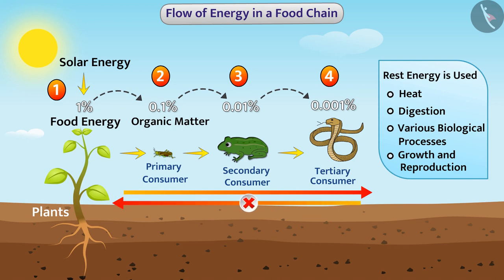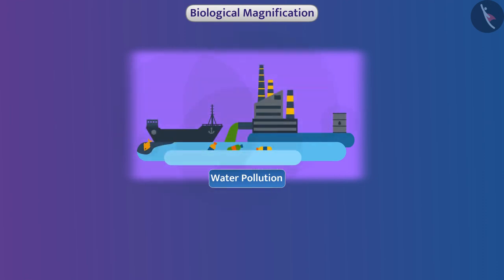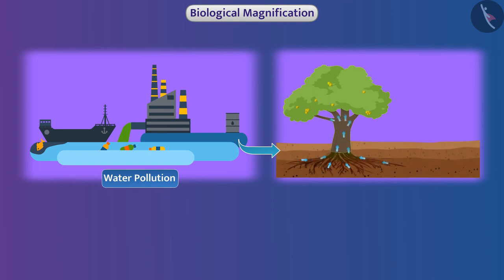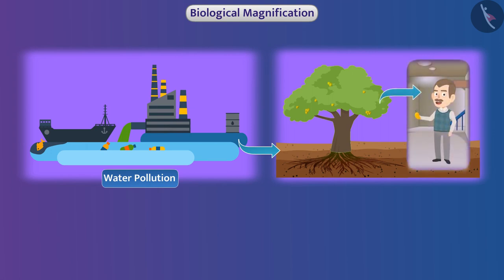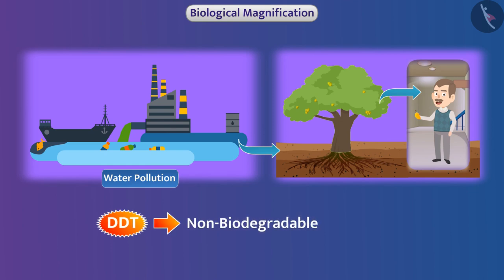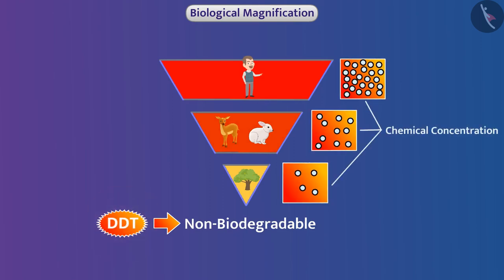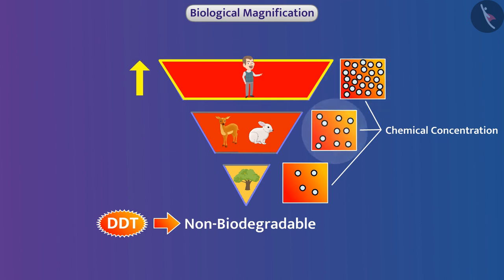There is one more important thing in the context of the food chain. Due to water pollution and use of excessive chemicals, various chemicals move into the soil and are absorbed by plants. These chemicals are transferred from plants into other animals. Some chemicals such as DDT are non-biodegradable, so they are progressively accumulated at each trophic level — this is called biological magnification. The concentration of chemicals at any trophic level is higher than at the level below it, and since humans occupy the top position in the food chain, the concentration of these chemicals is highest in humans.